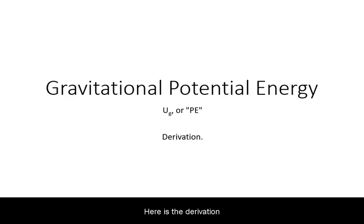Here is the derivation for gravitational potential energy. This quantity has the symbol U sub G or in many texts just PE for potential energy.